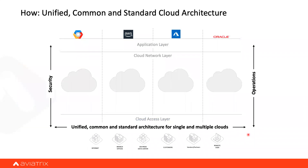To eliminate these barriers, the answer is to follow an architecture approach. When building your network in the cloud, you need to follow proper architecture — just as you use spine-leaf or three-tier architecture with access, aggregation, and core in your data center. The proposed architecture has a cloud access layer at the bottom, where on-prem resources, branches, and data centers connect into the cloud.